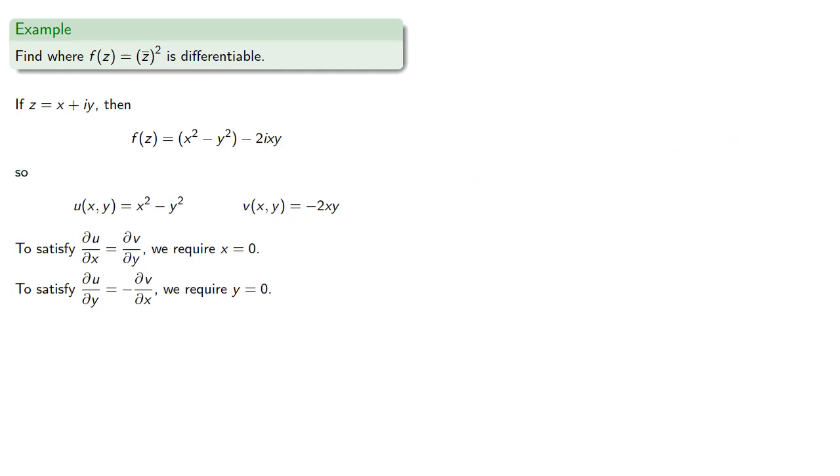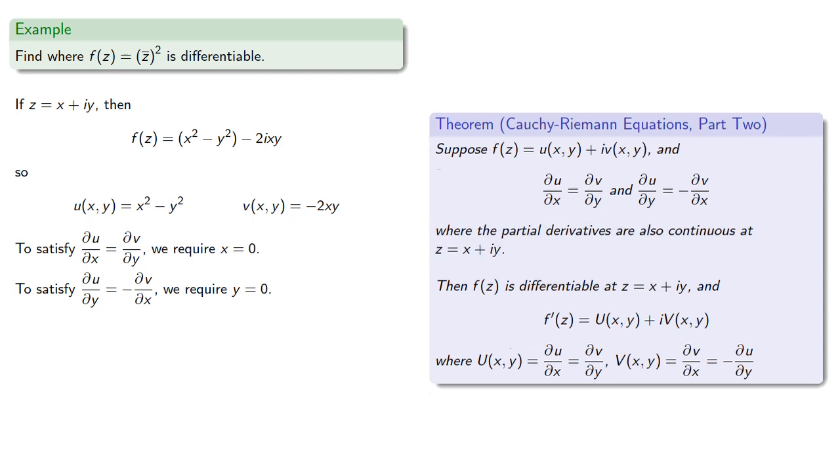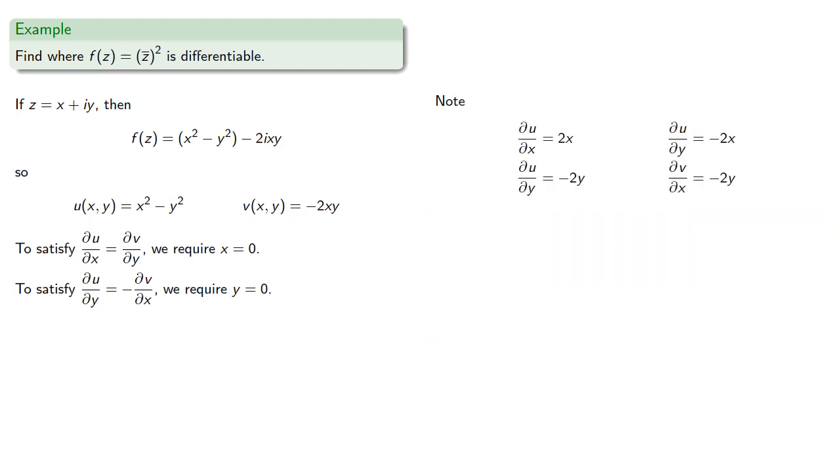Now remember that differentiability also requires our partial derivatives to be continuous. So let's verify that. At x equals 0, y equals 0, these are all continuous functions. And note there's no other place where the Cauchy-Riemann equations will be satisfied. And so f of z is differentiable only at z equal to 0.